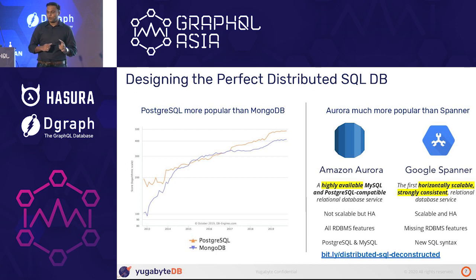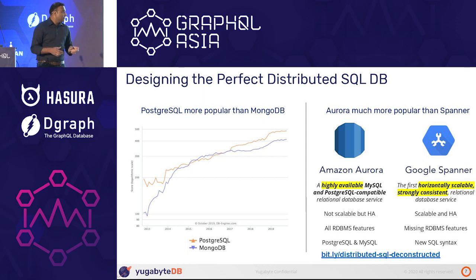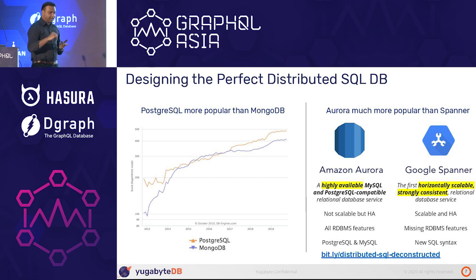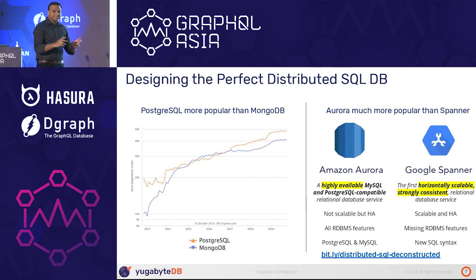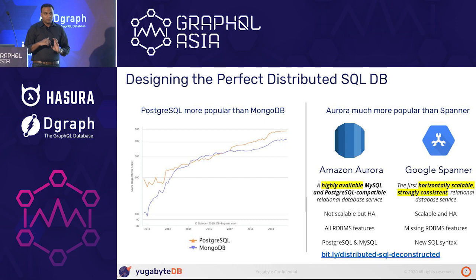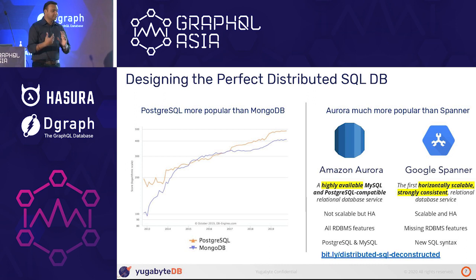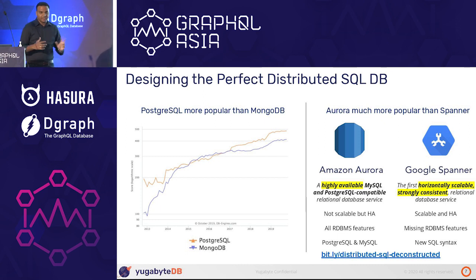The two most popular distributed SQL databases are Amazon Aurora from AWS — the fastest-growing service in Amazon — and Google Spanner, probably the first truly scalable database, which powers Google Maps and Google AdWords and is now available as Cloud Spanner on GCP. Amazon Aurora is 100% relational with MySQL and Postgres offerings, but can only scale to a certain point due to shared storage architecture. Google Spanner is truly horizontally scalable across the globe, but it's missing some relational features because they created their own new SQL dialect — so developers can't use foreign key relationships and things like that.